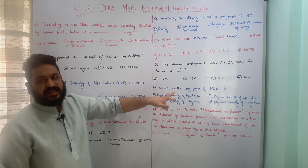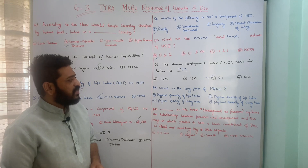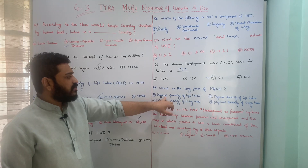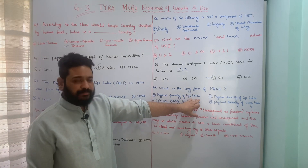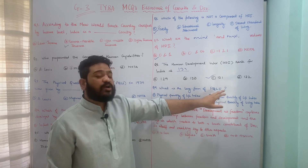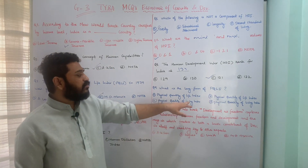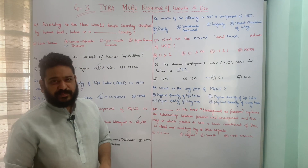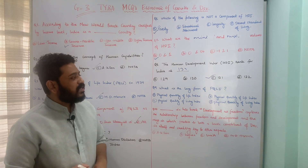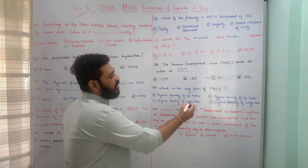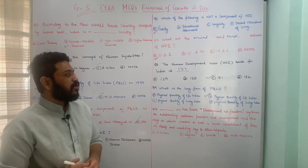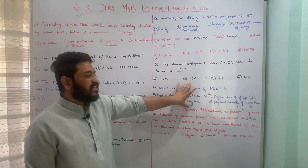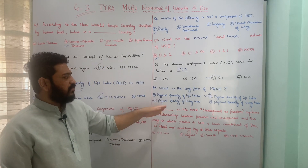The next question asks for the long form of PQLI. Options are: physical quantity of life index, physical quality of life index, physical quality of living index, or physical quantity of living index. PQLI stands for physical quality of life index, which is option B. I hope this is clear — we have already talked about the Physical Quality of Life Index.